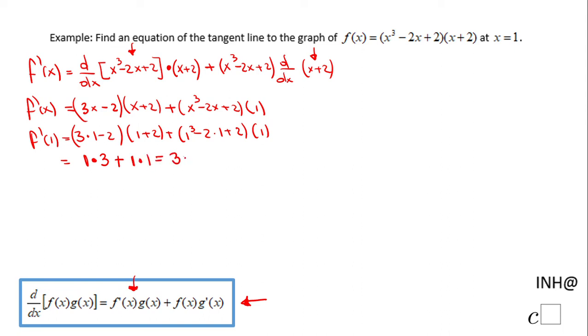So we have 1 times 3, which is 3, plus 1. The derivative at 1 is, sorry this is, 1 is 4. And this one is nothing else than the slope of the tangent line.